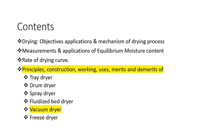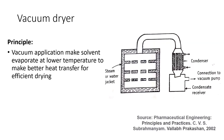So far we have discussed the basics of drying, followed by a tray dryer, drum dryer, spray dryer, and fluidized bed dryer. In this video we shall talk about the vacuum dryer. The basic principle of the vacuum dryer is that the material to be dried is subjected to vacuum, which lowers the pressure so that water will boil at a comparatively lower temperature.